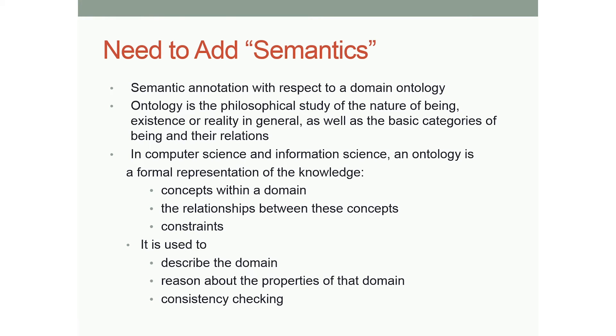At least some of the usages of ontology: first, to formally describe a domain so we can do reasoning; and also consistency checking, because we can add cardinality constraints — for example, we can define that a person can only have at most one spouse.